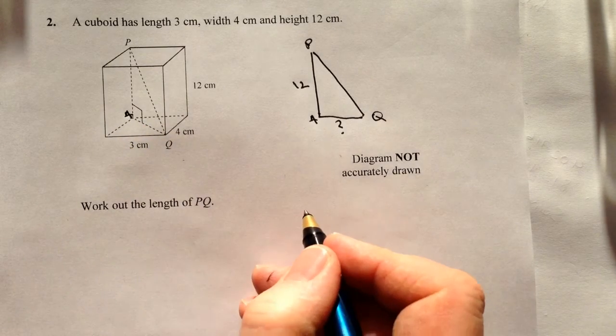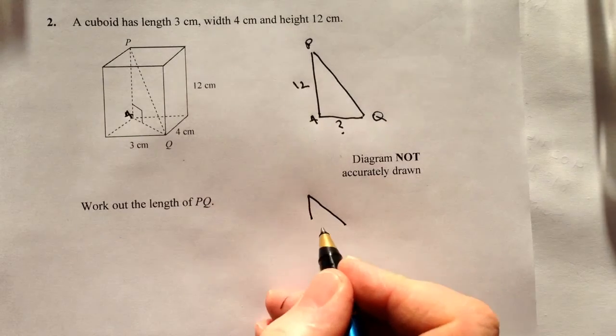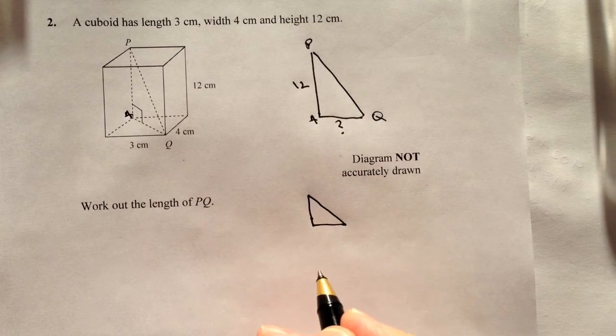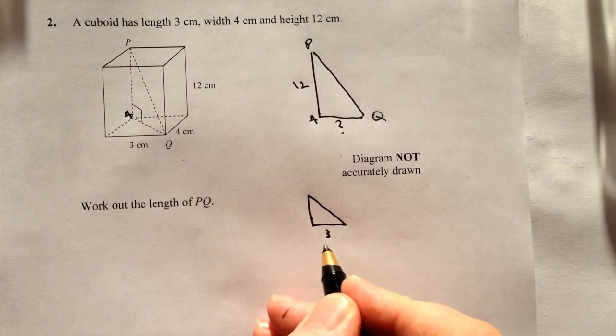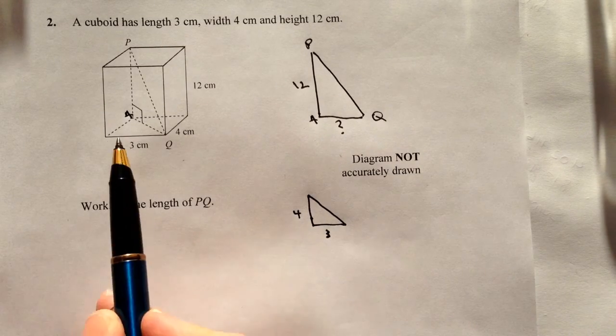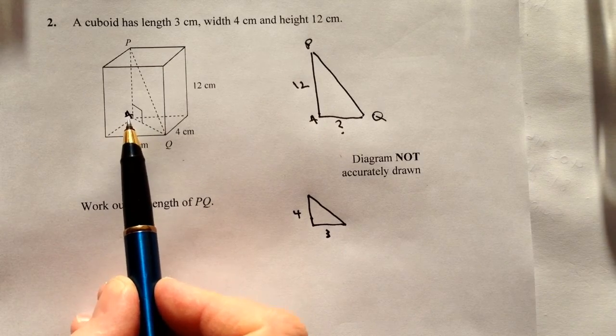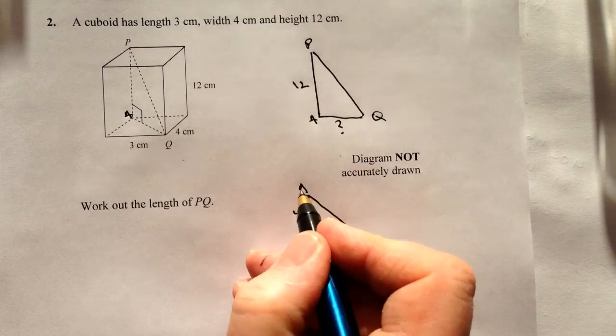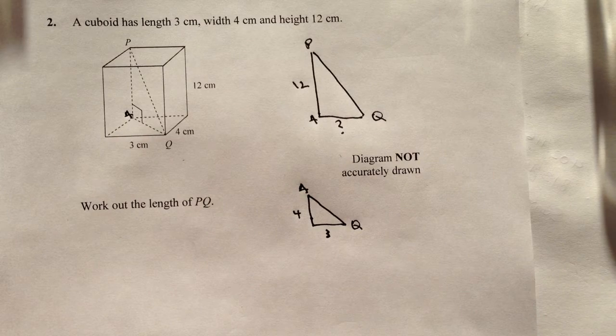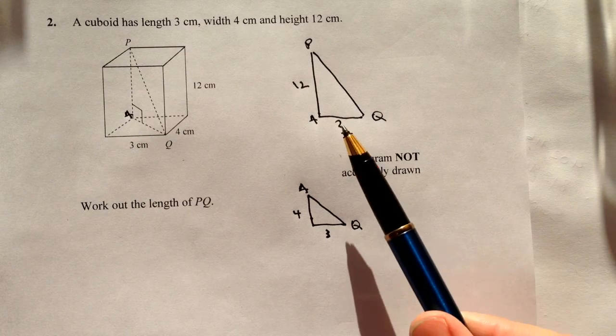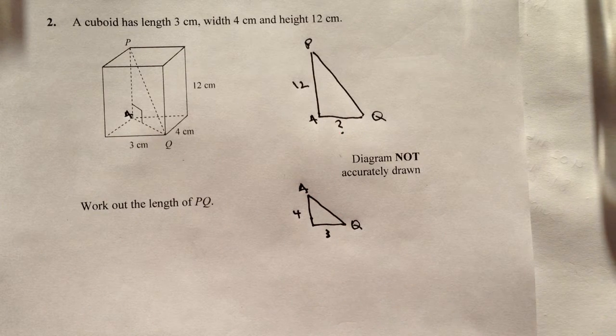So if I just draw that out, we've got this type of triangle where this dimension is 3, this dimension is 4, so this is 3 along here and this is 4 along here. And AQ, which we need to work out, is going to be the same measurement that we're going to use for the big triangle in order to answer the question.